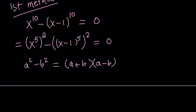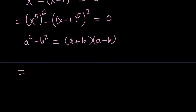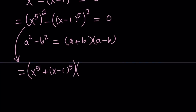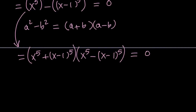Using that rule we can go ahead and factor this expression as x to the fifth plus x minus 1 to the fifth, times x to the fifth minus x minus 1 to the fifth, and that is equal to zero. So we were able to break down our expression into two factors, and each of these factors can also be factored.